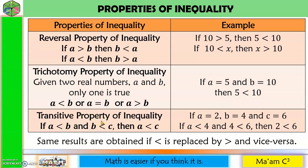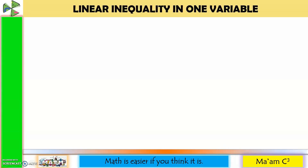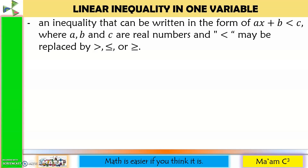The transitive property of inequality states: if A is less than B and B is less than C, then A is less than C. In properties of inequality, the same results are obtained if 'less than' is replaced by 'greater than' and vice versa. A linear inequality in one variable can be written in the form AX plus B is less than C, where A, B, and C are real numbers, and the inequality symbol may be replaced by greater than, less than or equal to, or greater than or equal to.